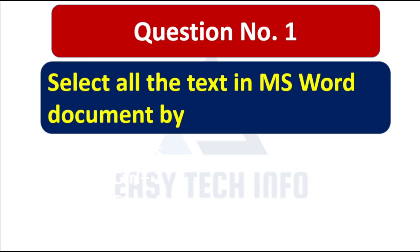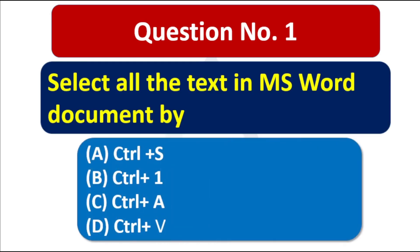Question number 1: Select all the text in an MS Word document by. The correct answer is option C, Ctrl+A. We can select all the text in MS Word by pressing Ctrl+A.